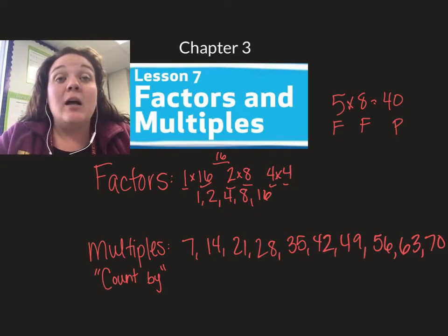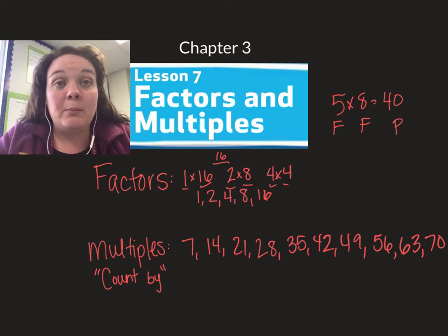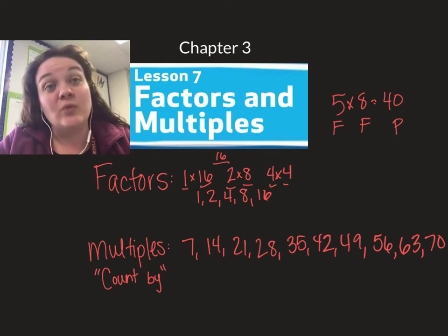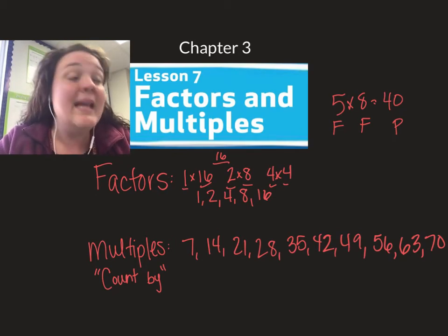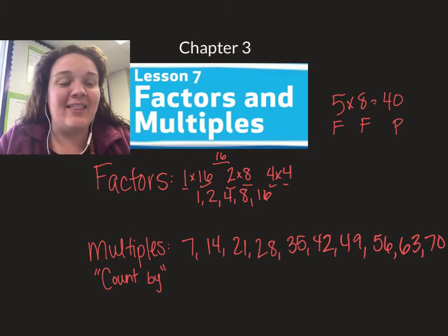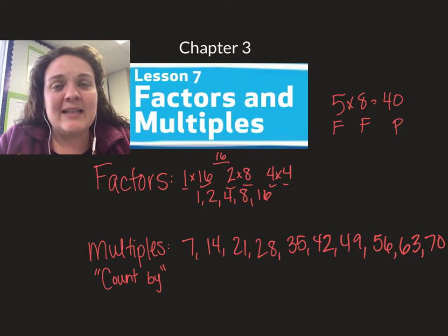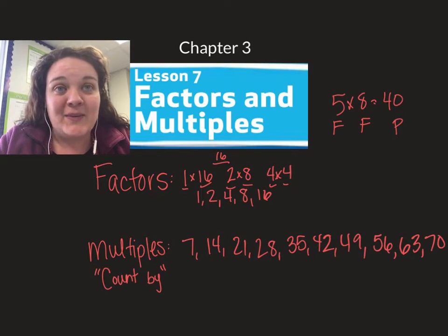And then there's a thing called multiples and I like to think of multiples as count by numbers. So if I said what are multiples of 7? You would say 7, 14, 21, 28, 35, 42, 49, 56, 63, 70 and so on. It doesn't stop at 70 but I just didn't think I needed to do all of them. So multiples are count by numbers and factors are the numbers we're multiplying together to get a product.